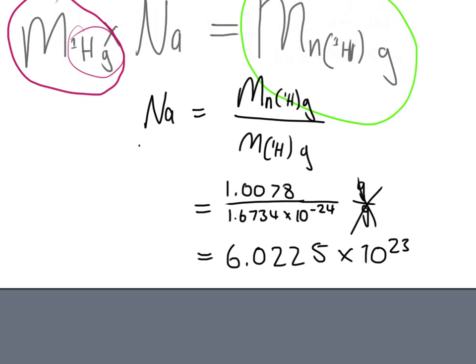And if you check your data sheet for chemistry, you'll find that 6.0225 × 10²³ is the value they give for the Avogadro constant. So that's how you would work it out. Hope that's helpful.